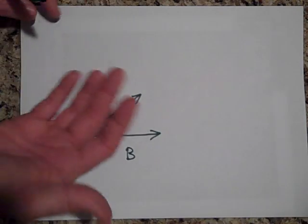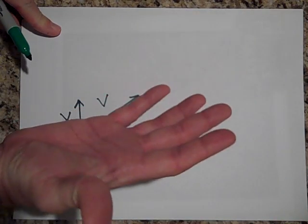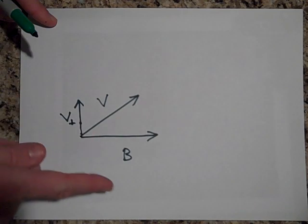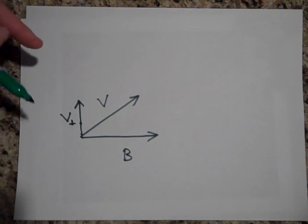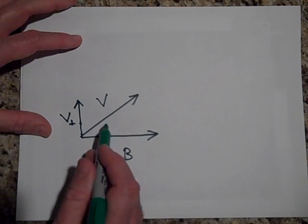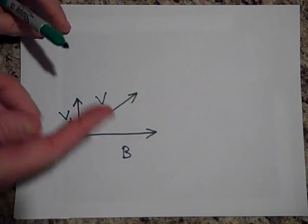So that's going to get pushed that way. Now, if it starts heading that way, then it's going to be pushed up. And so it's going to go around in a circle like this, but this part of the V is going to carry it along. And so it's going to go like that.